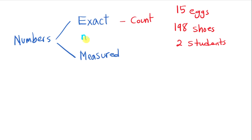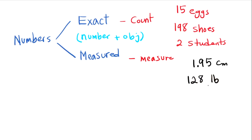After any numbers reported here, you see one object. So this is a general pattern for exact numbers: after numbers we have object, like 15 eggs, 198 shoes, two students. Whenever we talk about measured numbers, we are going to measure the objects. We don't count them. For example, I'm going to say 1.95 centimeter, I may say 128 pounds, I may say 76 degrees Fahrenheit.